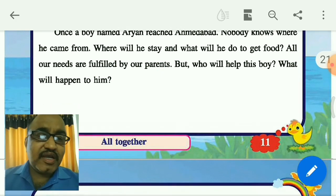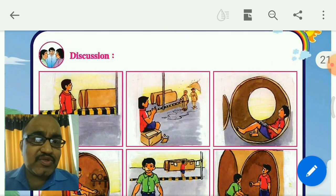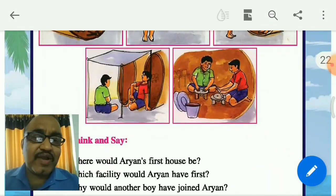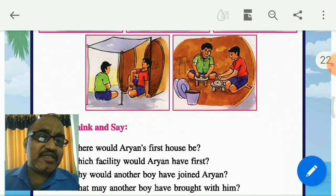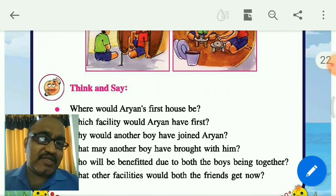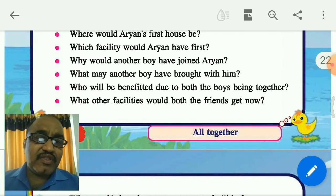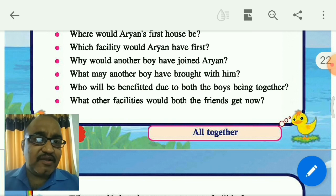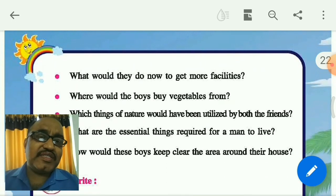In Aryan's story, you know that his first house was a pipe, and afterwards he met one good friend and slowly they increased their facilities. With another boy's help, they both benefited and now they got more facilities.